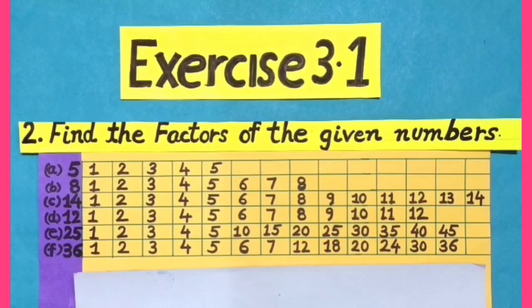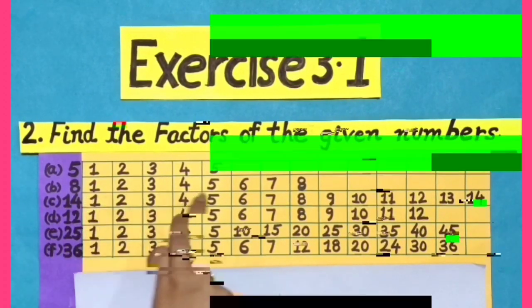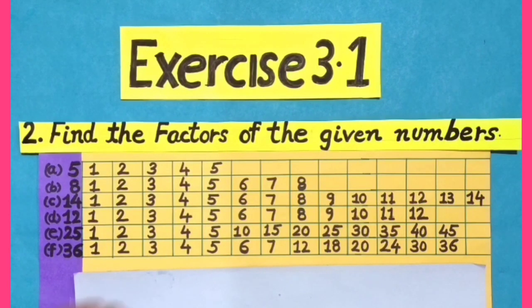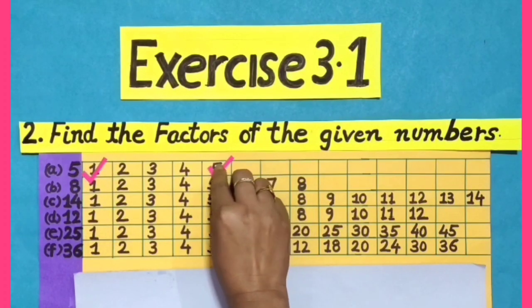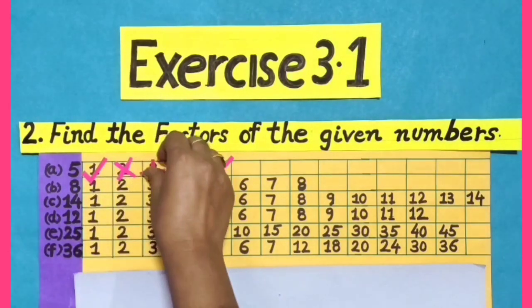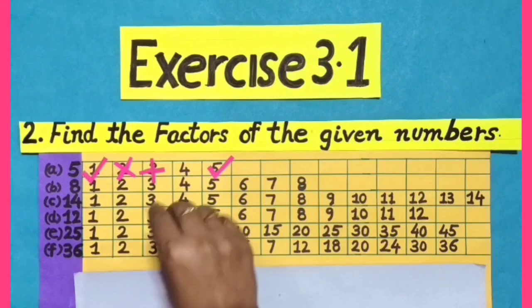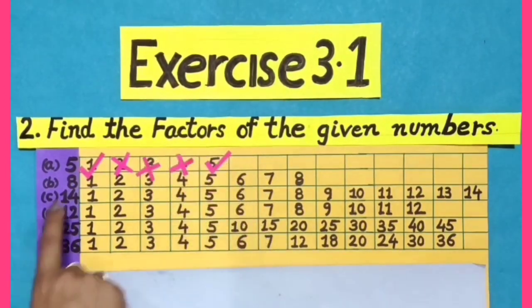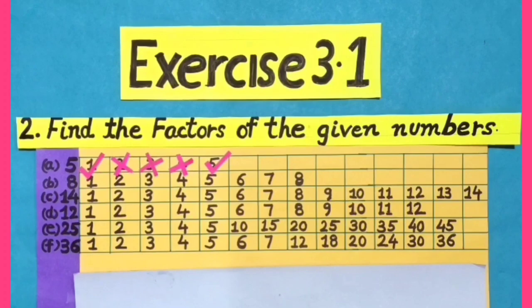As we know, 1 and 5 are factors of 5. We will tick mark 1 and 5 and cross 2, 3, and 4 as these are not the factors of 5.